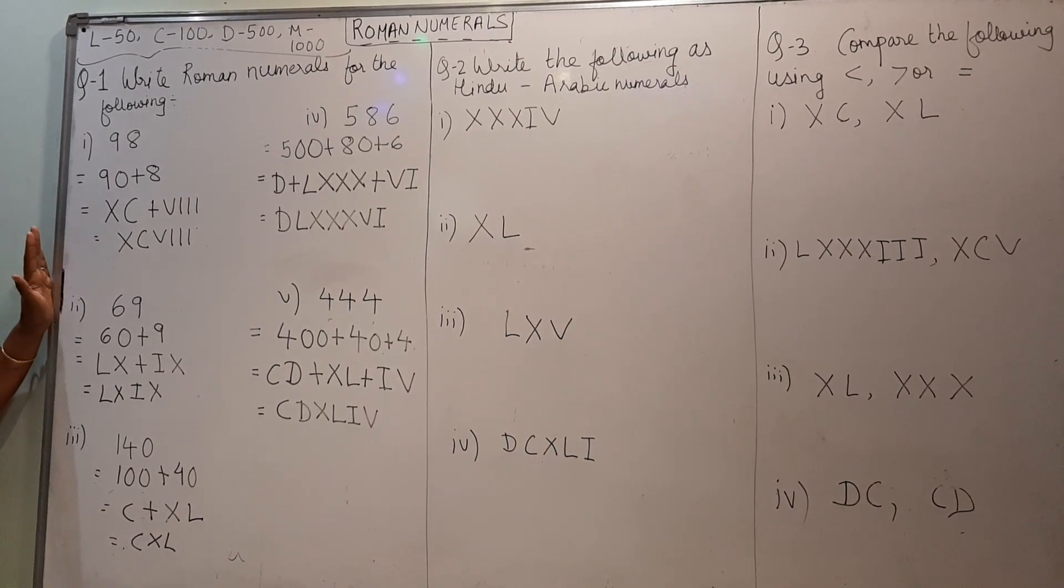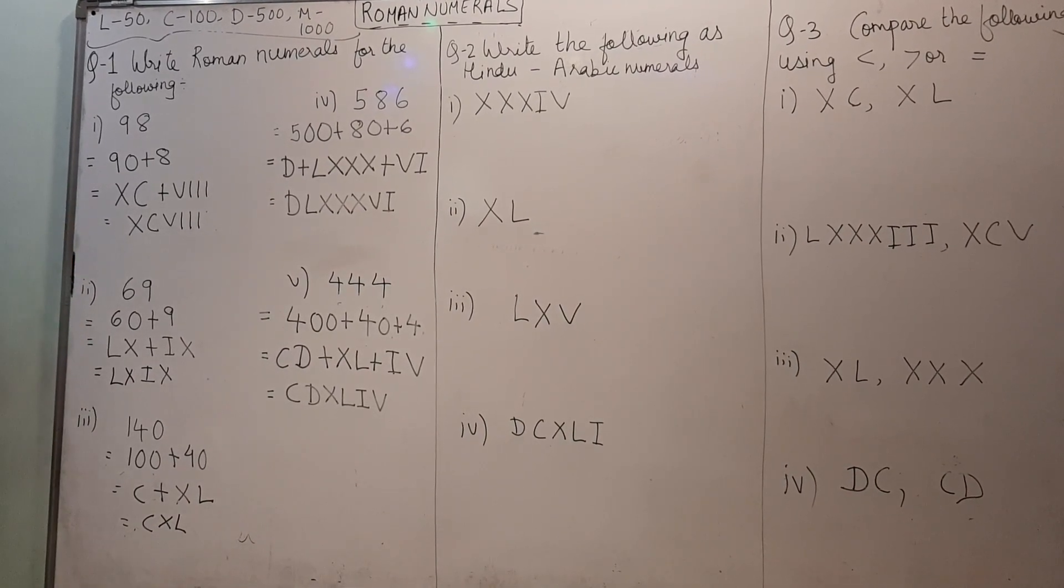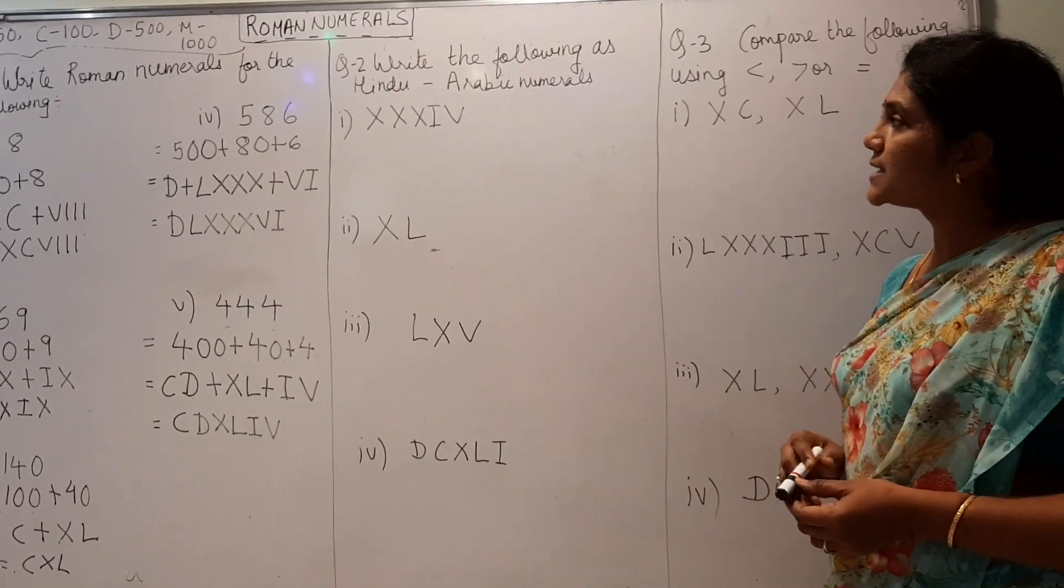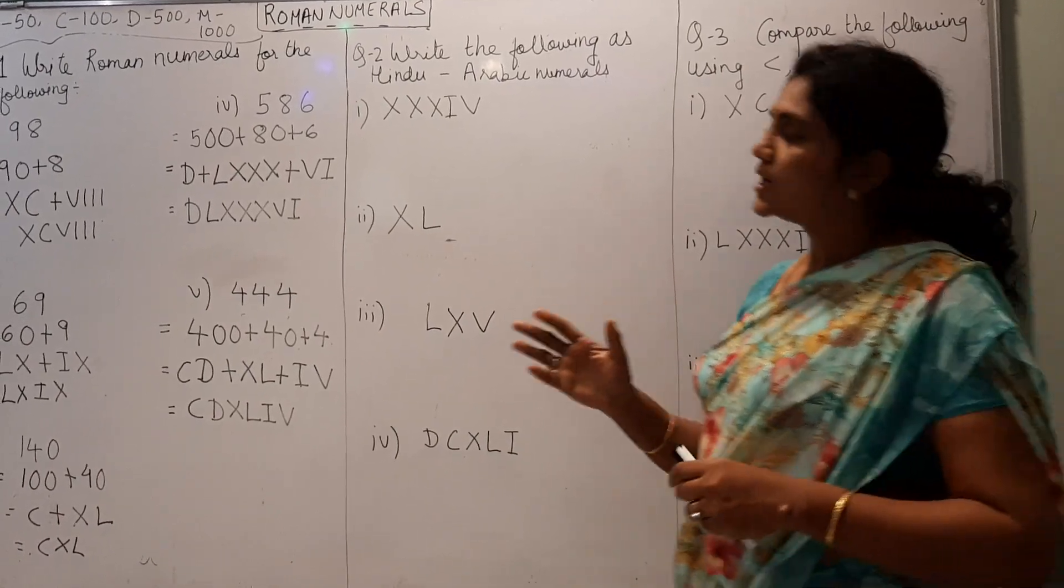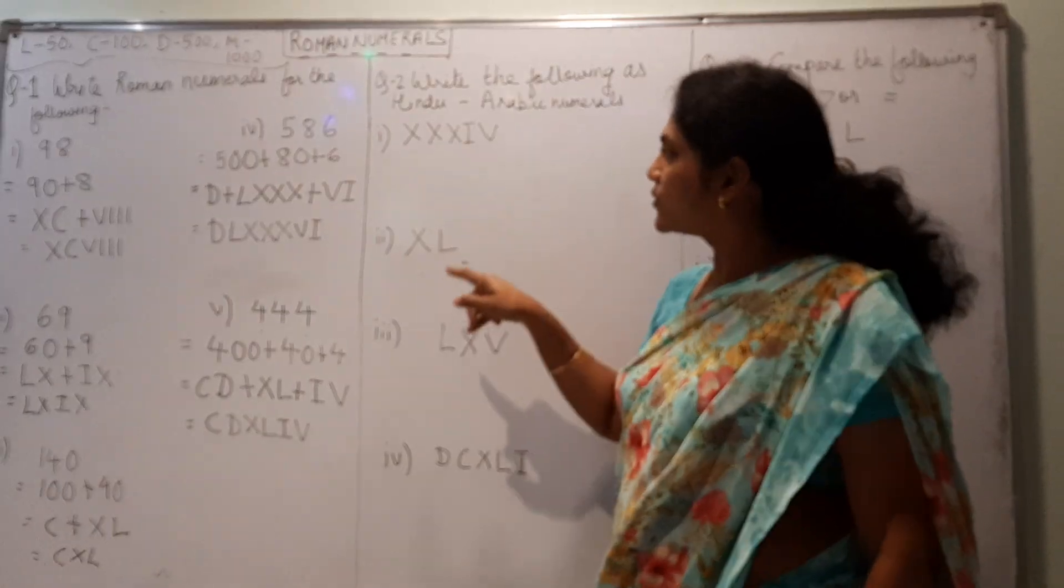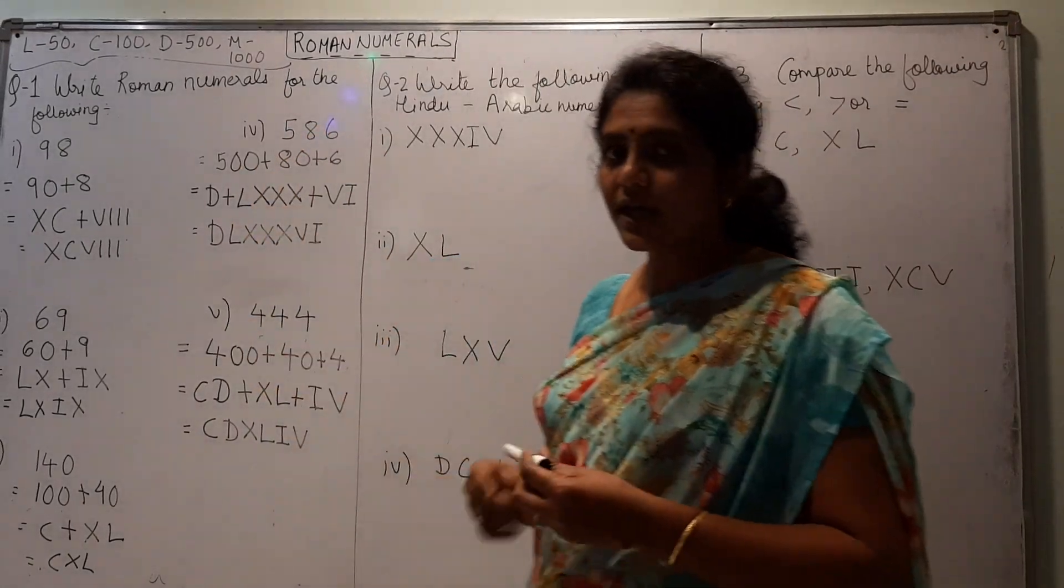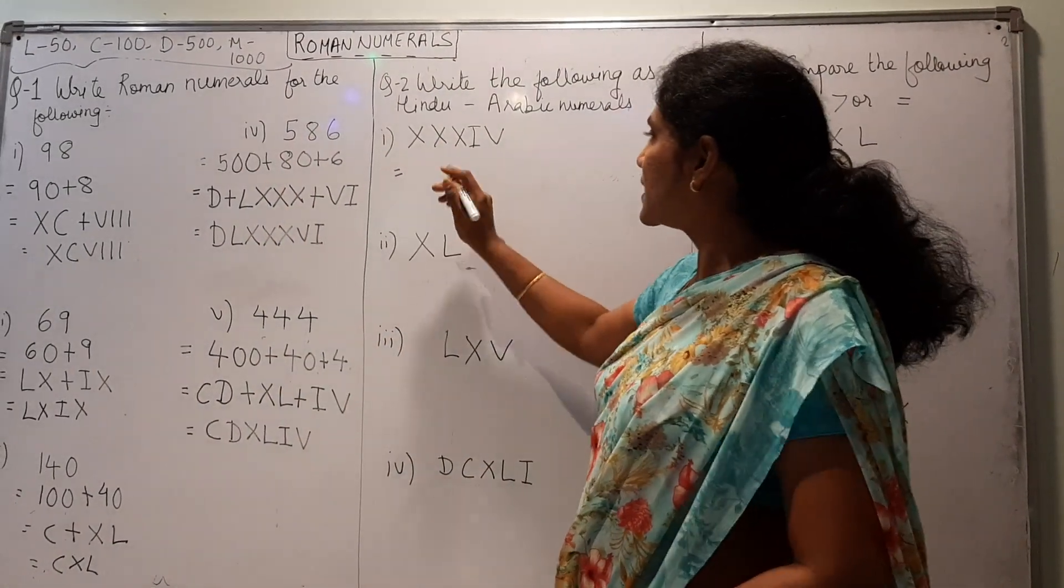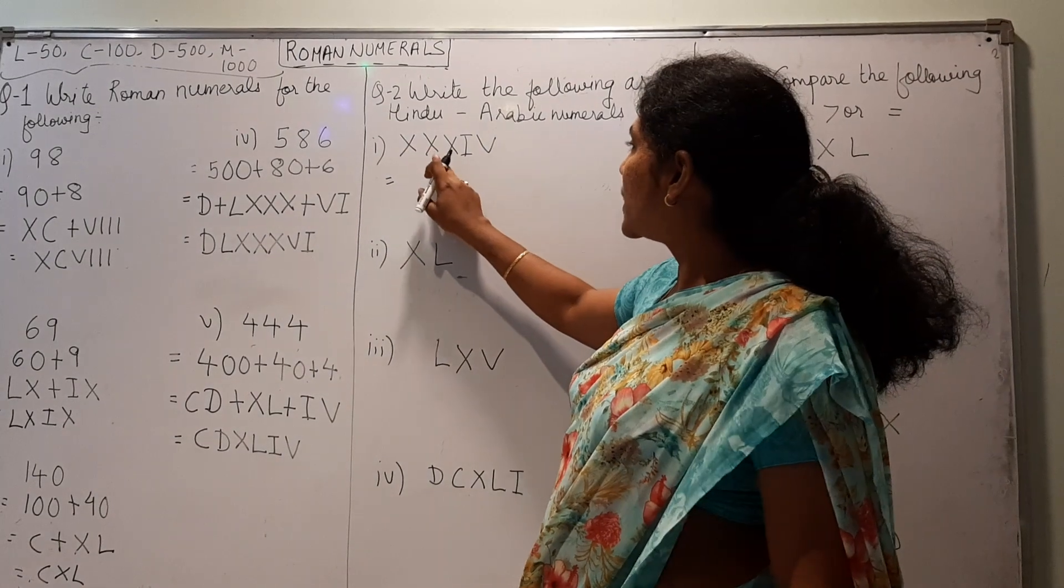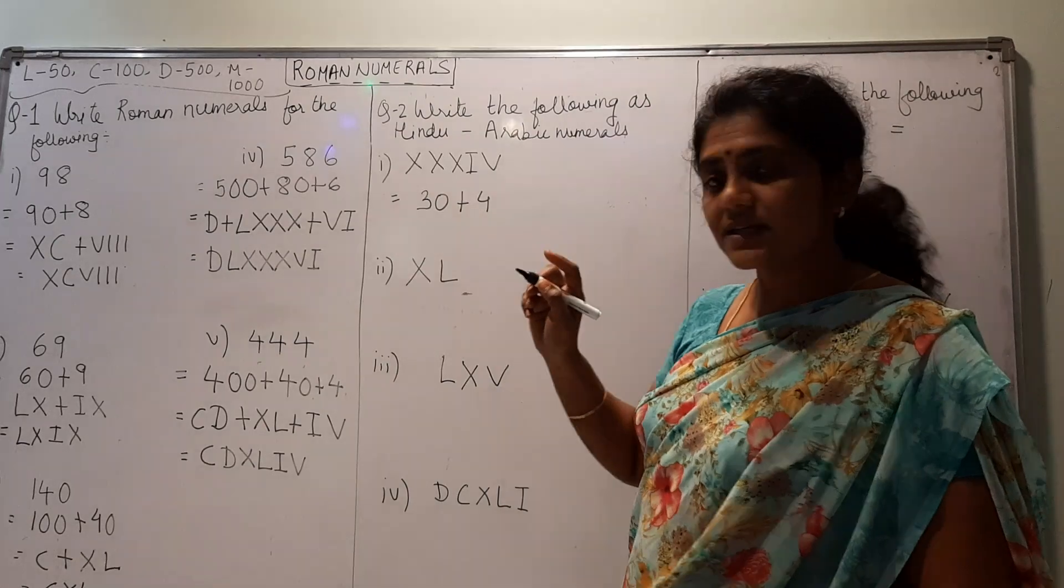This is one type of the question you can get related to roman numerals. Now, second, write the following as Hindu-Arabic numerals. We have to do opposite to this. In this, question is given in roman numerals. You have to convert in numbers. Now, this you can write as XXIV. You know, 10, 20, 30. 30 plus 4, this will be 34.